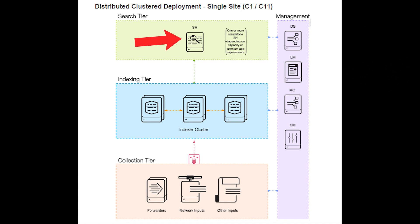This SVA has a single search head, which means that while there is redundancy at the data ingest tier provided by the Indexer Cluster, there is no redundancy for search head activities like content creation, reporting, and alert generation. This is a very popular architecture that many organizations choose because of the redundancy at the data ingest tier. Although there isn't redundancy in search, search head failures are very rare and can be easily solved with a reboot.